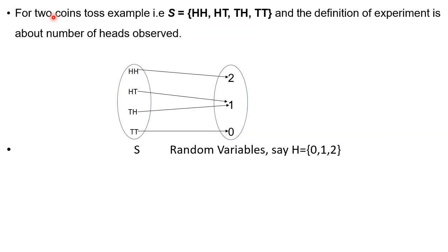Let us take another example: a two-coin toss example. In this example, we see that whenever we toss a coin twice, we are going to get 4 outcomes. Therefore, the sample space is defined with four combinations: HH, HT, TH, and TT.